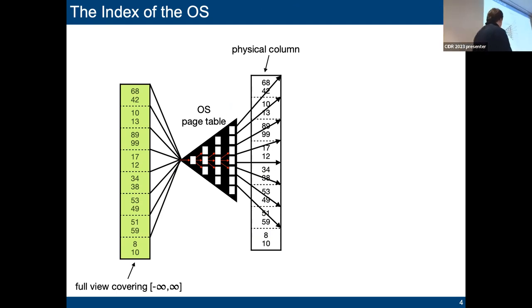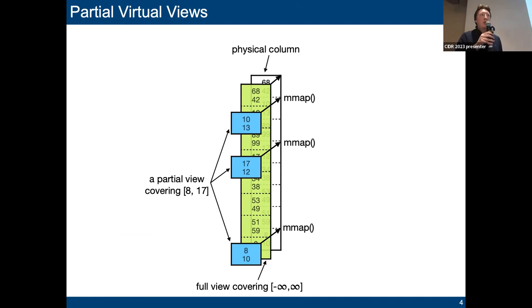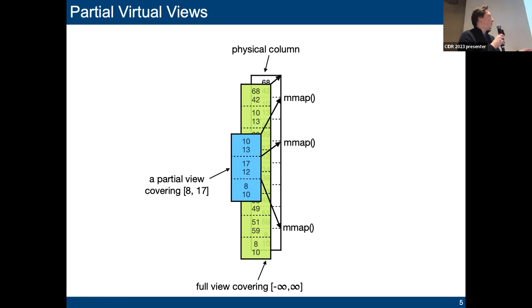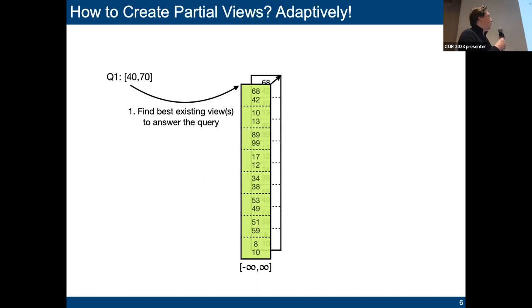The idea is basically to create, additionally to this full view bringing the entire dataset, so-called partial views that cover only a portion of the dataset having some kind of property, like covering a particular value range. We can do that using the system call mmap, and we can even create a consecutive virtual memory area that maps to the scattered physical pages that qualify in this context. Then of course we can route our scans to these partial views and speed them up.